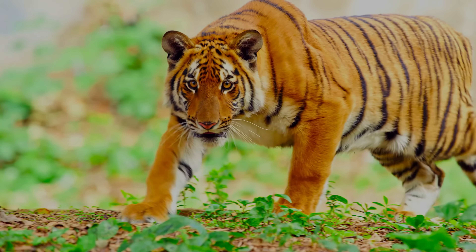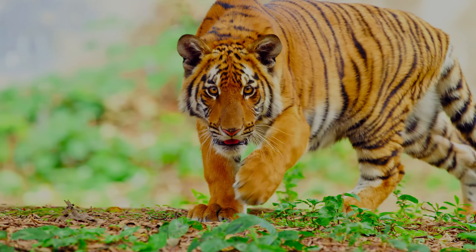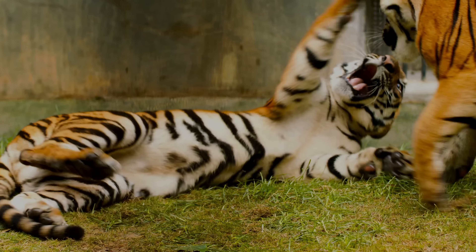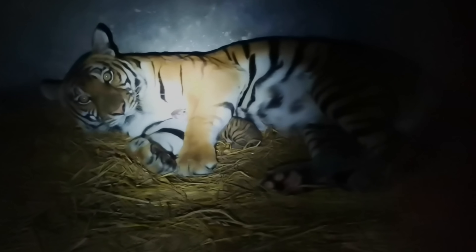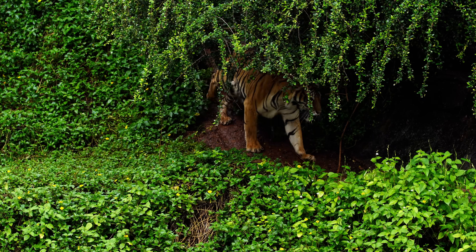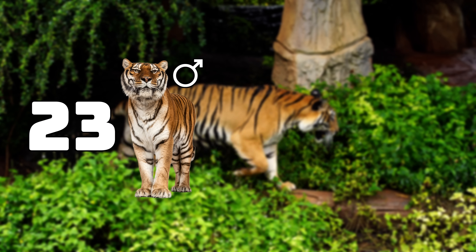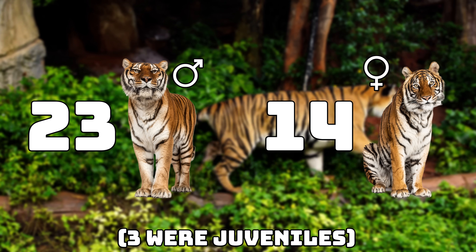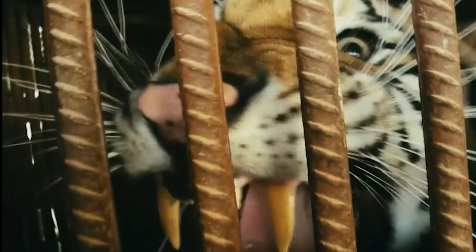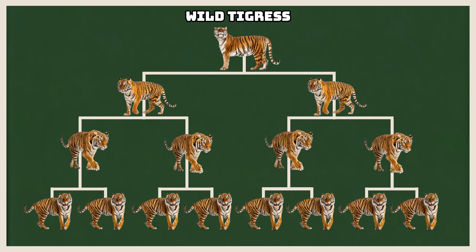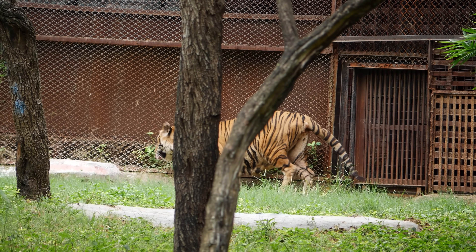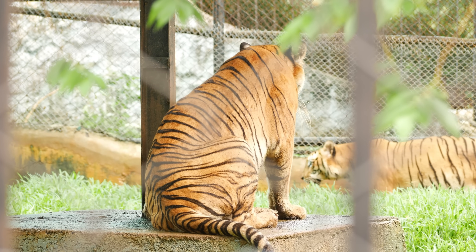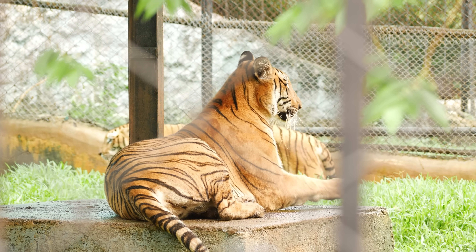Because of their dwindling population, protections were put in place and breeding programs were started in captivity. 40 purebred South China tigers were kept in 17 Chinese zoos, and this population included 23 adult males and 14 adult females. None of these tigers were wild born, and all were third or fourth generation descendants of one wild tigress. This meant that there was very little genetic variation, and there was a lot of inbreeding going on to keep the South China tiger alive.